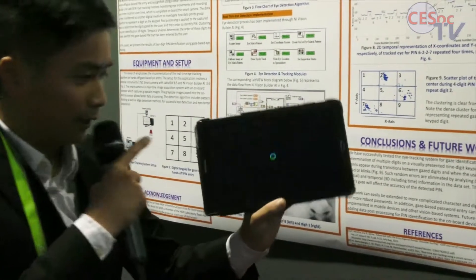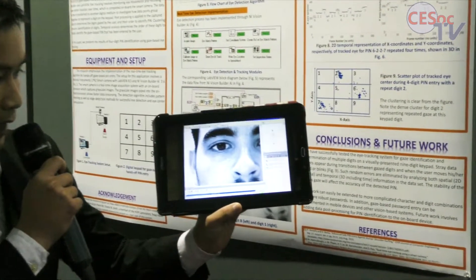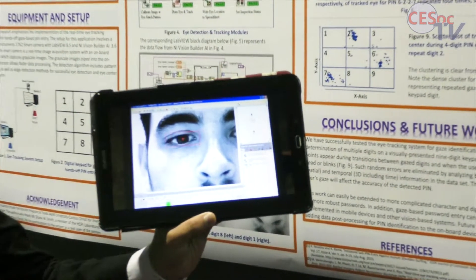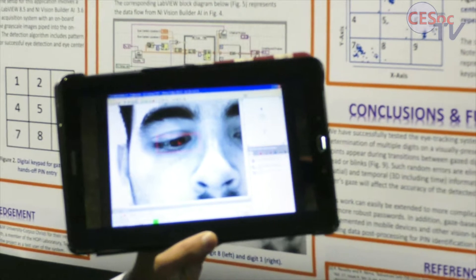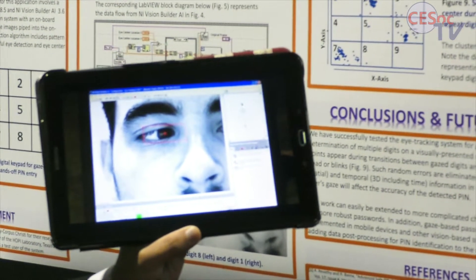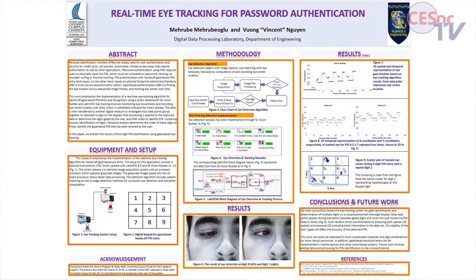You can see that the red box is drawn on the eye and it tracks the eye really well. It tracks the center of the eye in real-time.